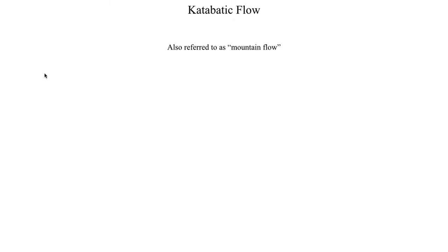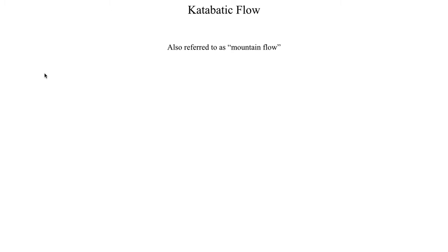The opposite of this would be a katabatic flow pattern, also sometimes referred to as a mountain flow pattern. It's sort of the same mechanism, except that now the slope of the mountain cools off much faster than the air at the base of the mountain or at lower elevations. As a consequence, you have negatively buoyant air which wants to descend down to lower elevations, resulting in what we refer to as downslope flow. Much like a sea breeze circulation, this also has its own diurnal cycle.